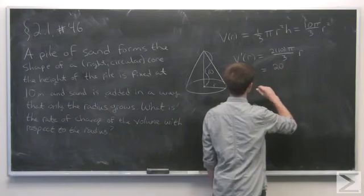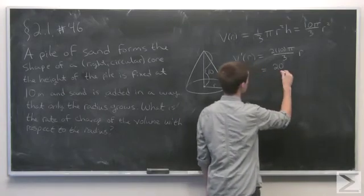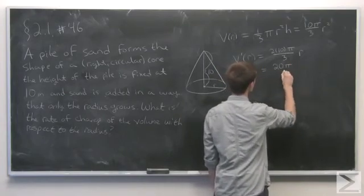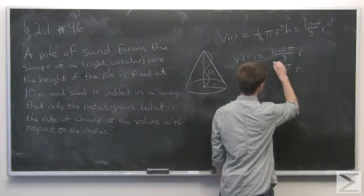So the rate of change of the volume of the cone with respect to the radius is 20π over 3 times r.